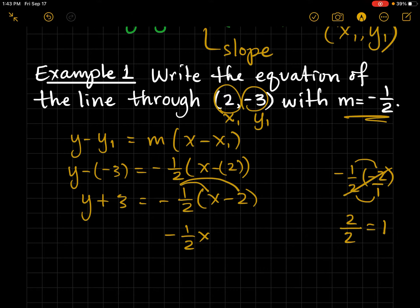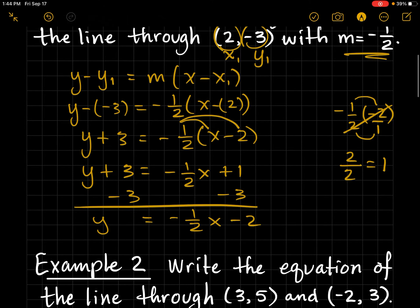Whenever you have a whole number, you can remember that you can write it over 1. And now negative times negative is positive. And you multiply the numerators together and the denominators together. So we just get 1. Also, you could have just canceled out the 2's. Now I'm going to subtract 3 from both sides. And so I just wrote this right here in slope-intercept form.